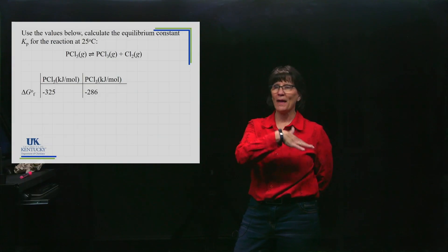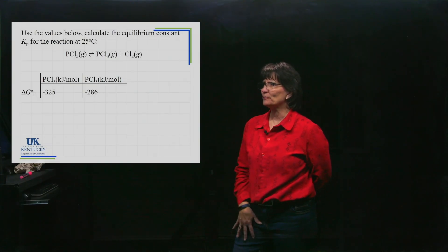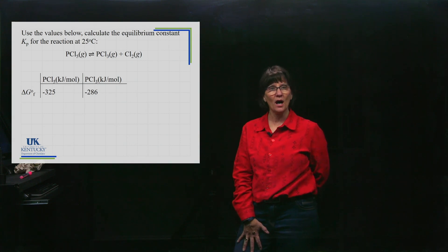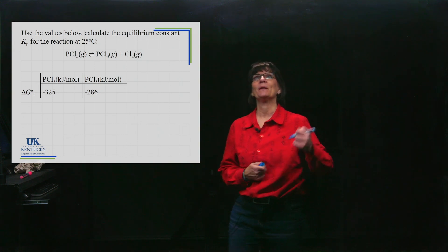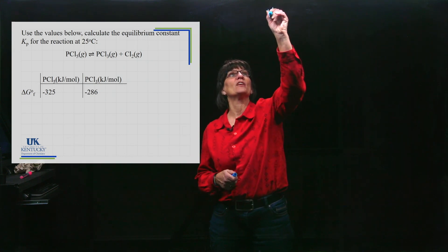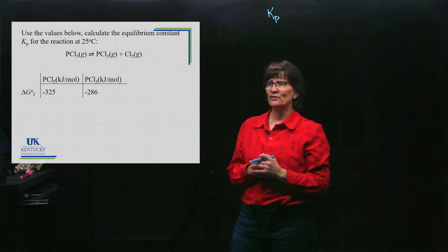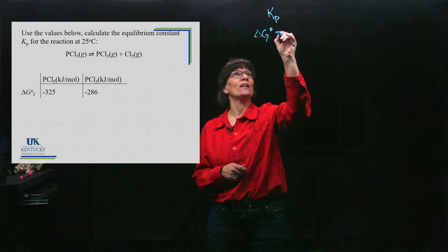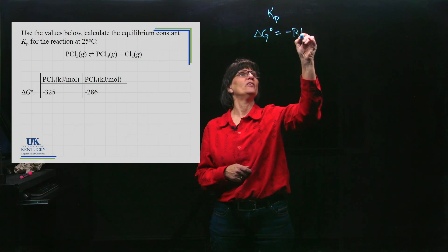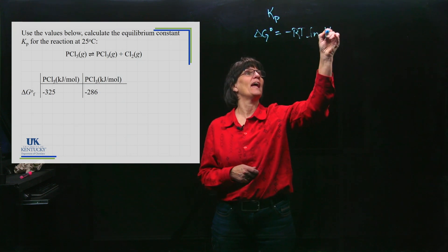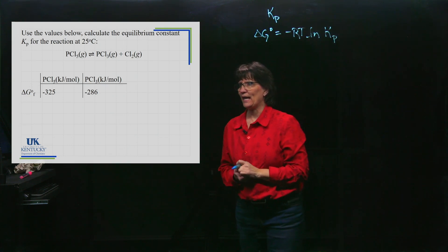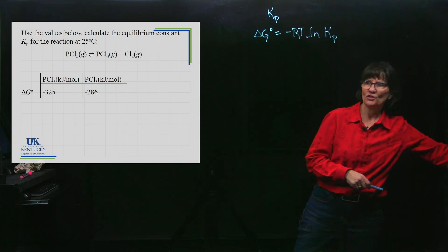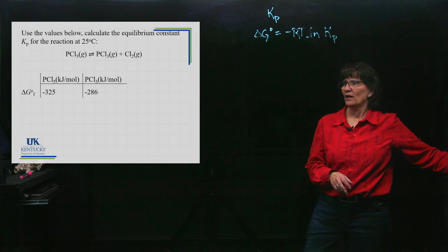Now let's do the next problem. In this problem, we are going to determine the equilibrium constant. It asks for Kp for that reaction. Kp is appropriate here because these species are in the gas state. We'll use the equation delta G° = -RT ln Kp.